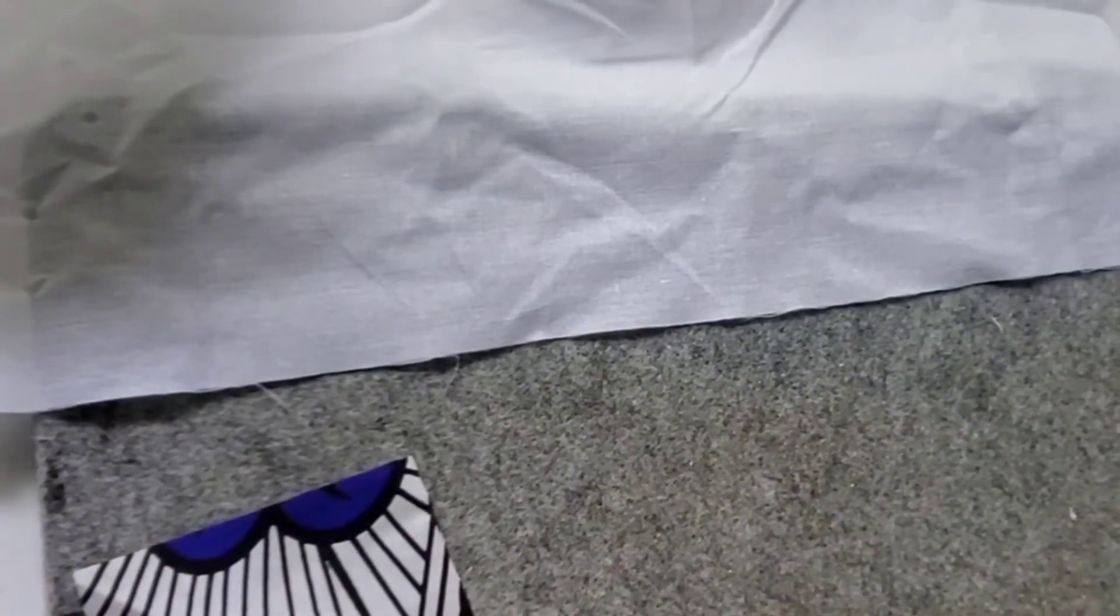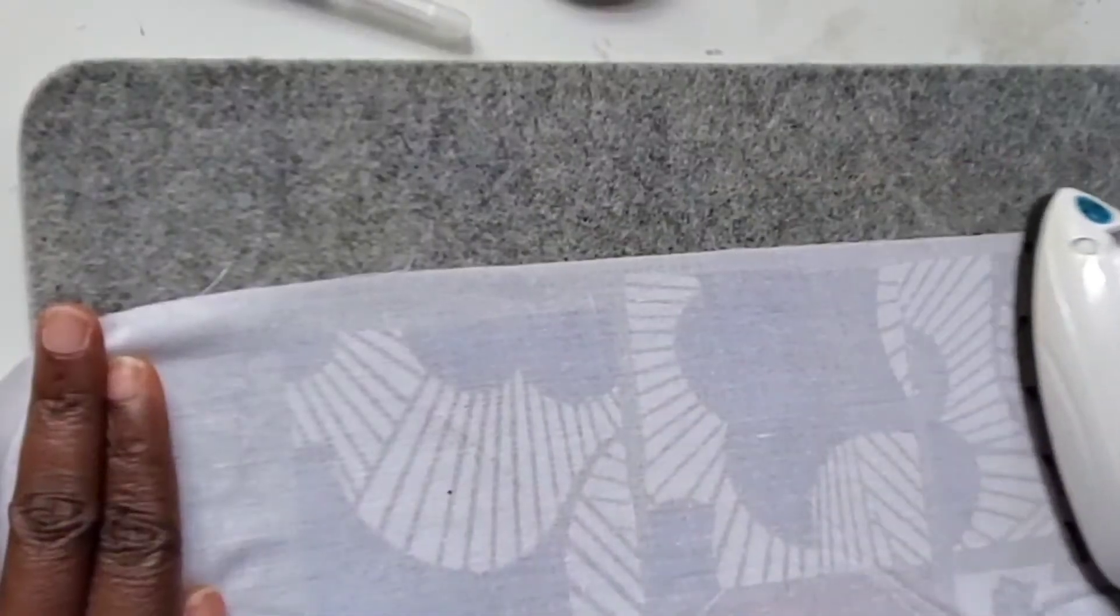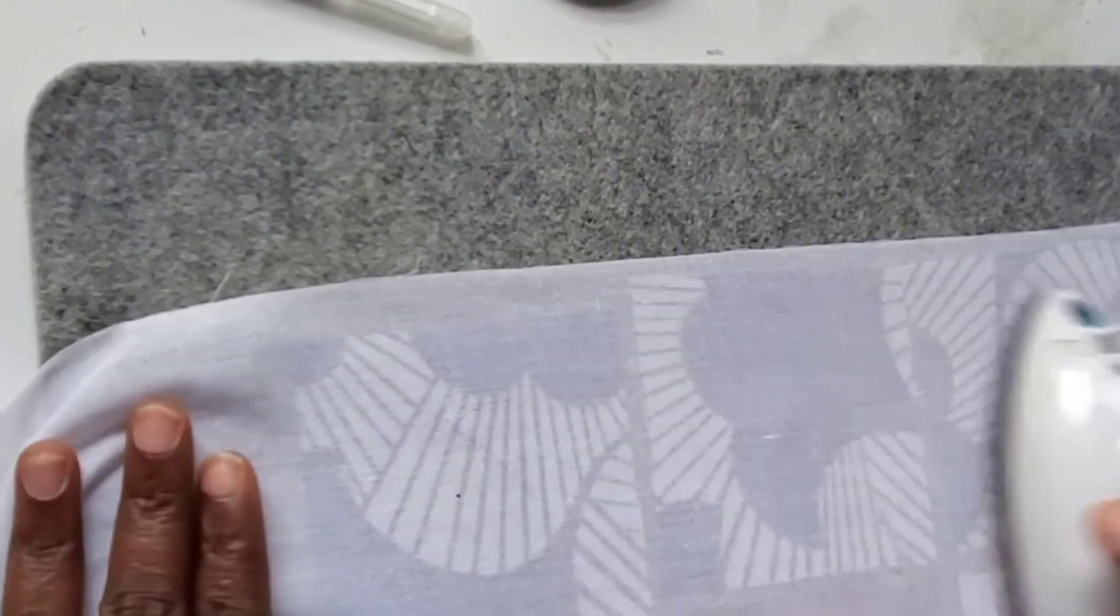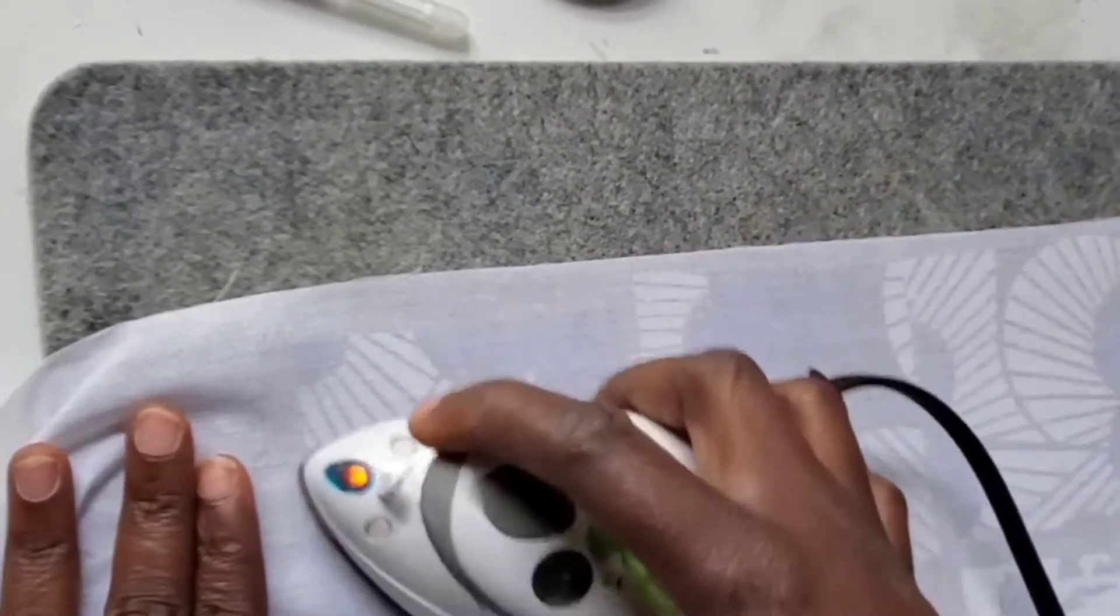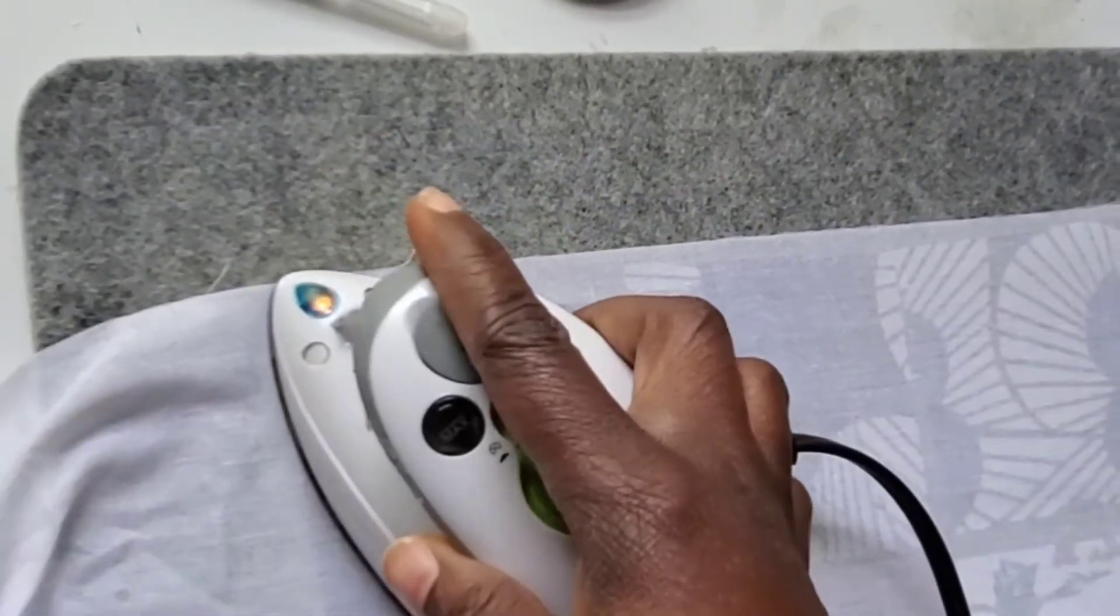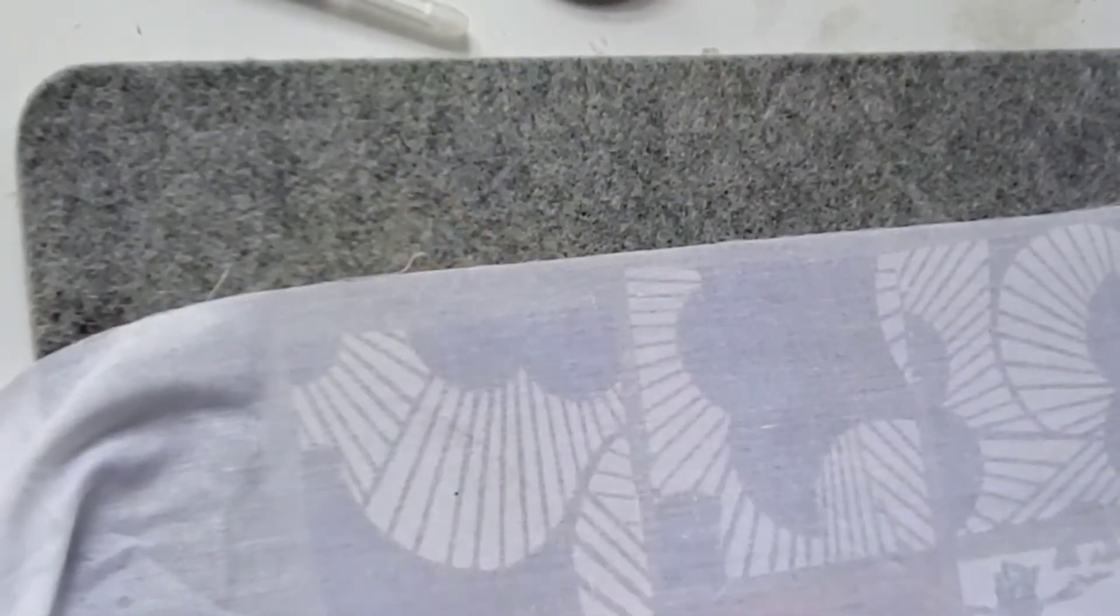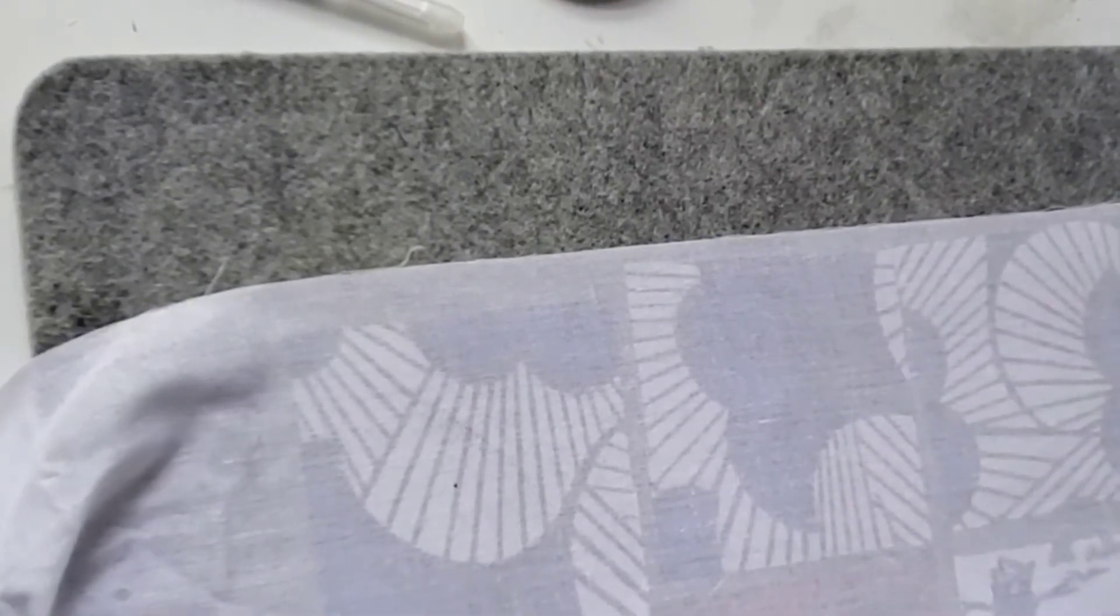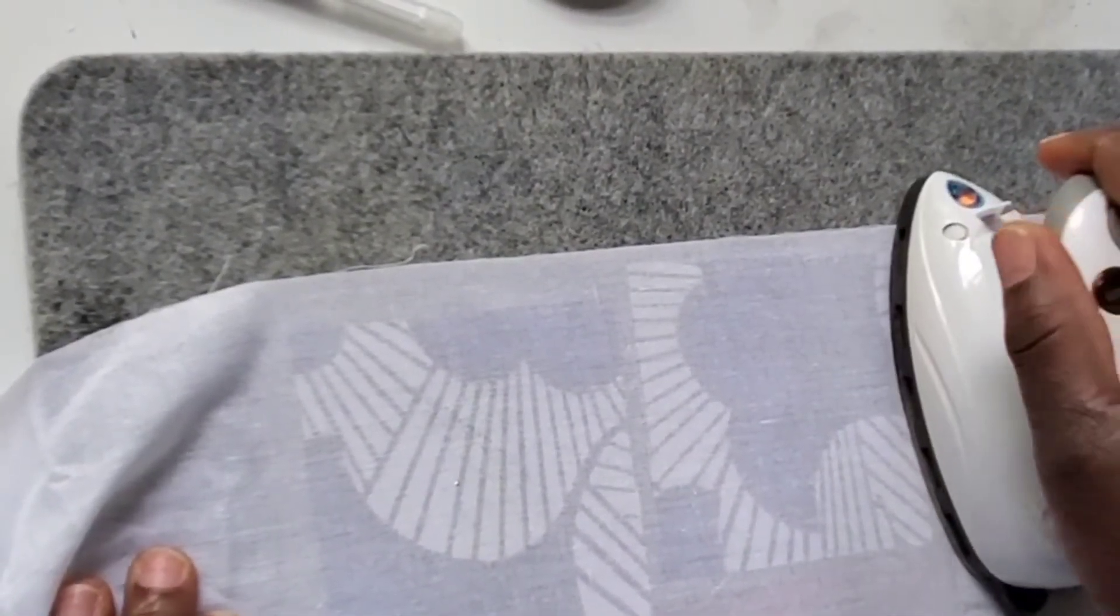Alright, so I'm back. This is the fusible, this is how you're gonna do it. You're gonna place the wrong side of the fabric up - the wrong side is gonna face you - and the bubbly side of the interfacing is gonna go towards the wrong side. All you're gonna do is just iron it and press it.